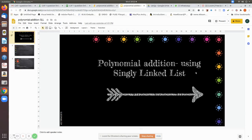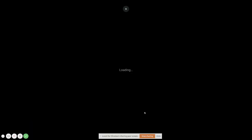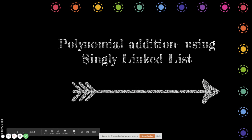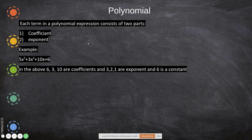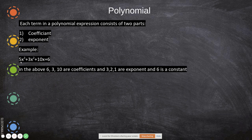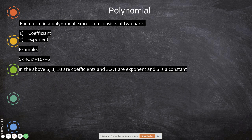We are going to see the implementation of polynomial addition using a singly linked list. First, we need to declare a structure to hold the polynomial. A polynomial can be represented as terms, where each term consists of a coefficient and an exponent part. When many terms are combined together, we call it a polynomial expression. For example, 5, 3, 10, and 6 are coefficients, and the corresponding powers are exponents.